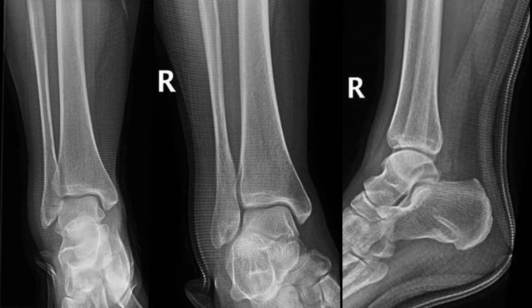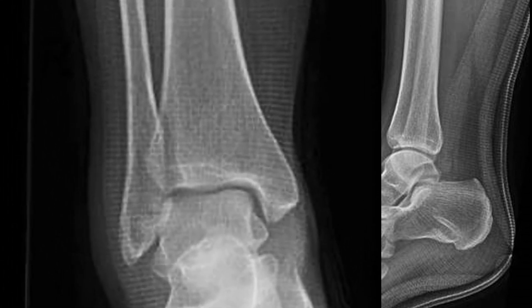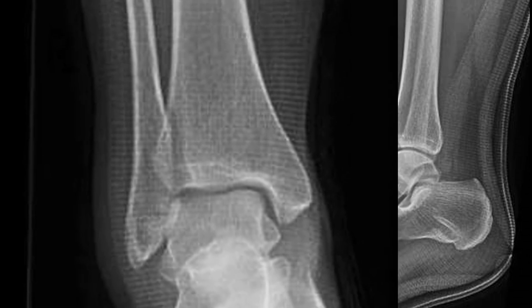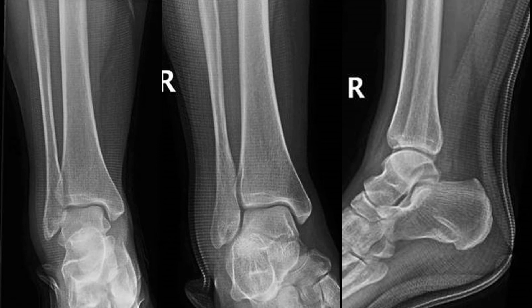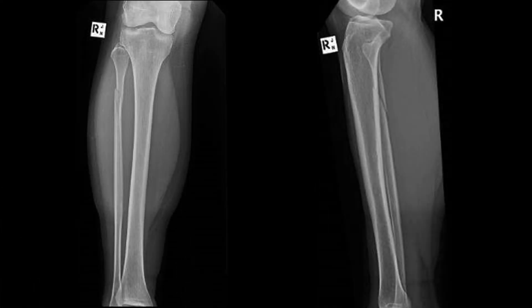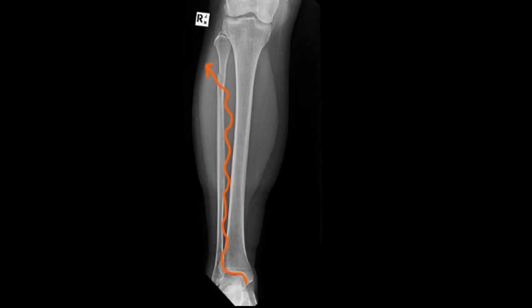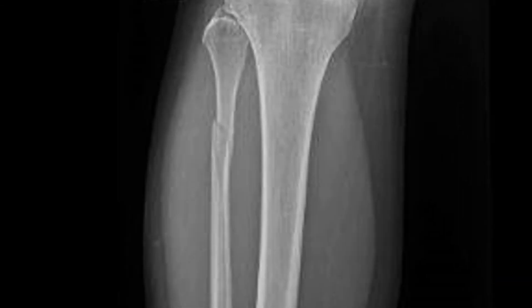X-ray number 10, our last: a young girl who twisted her ankle outwards whilst playing netball — quite a heavy fall. The initial X-rays were thought to be normal. A repeat physical examination showed she had pain all along her anterior lower leg and was point tender over the proximal fibula. Additional X-rays were taken. She has what's called a Maisonneuve fracture, where the eversion force has been transmitted through the now-injured interosseous membrane between the fibula and tibia, tracking up to cause a proximal spiral fibular fracture. This girl required operative intervention. That covers 10 commonly missed upper and lower limb X-rays in one coffee — hope you enjoyed it!